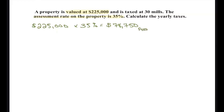We call it the assessed value — I call it the AV. Now you know you pay taxes off of that value. This problem is talking about mills. Do you know anything about mills? I'm totally spacing; I'm trying to remember from the last time we met, but that's okay.